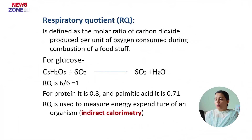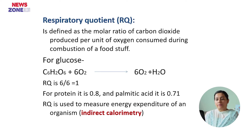If we can use the respiratory quotients, then we can use the calories — that is important. The respiratory quotient is used and is defined as the molar ratio of carbon dioxide produced per unit of oxygen consumed during combustion of a foodstuff. For glucose it is 1, for protein it is 0.8, and for fat (palmitic acid) it is 0.71.